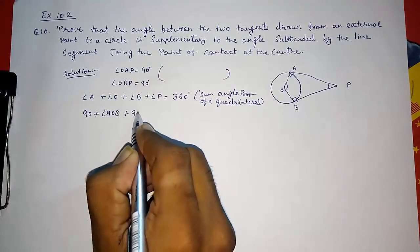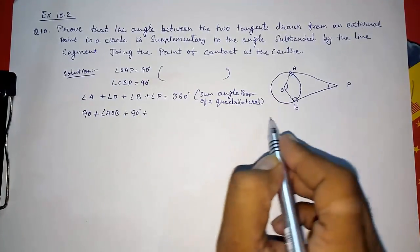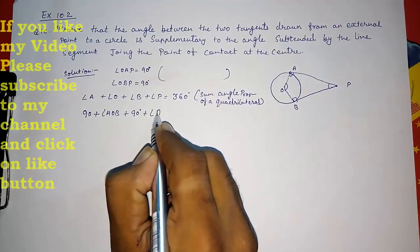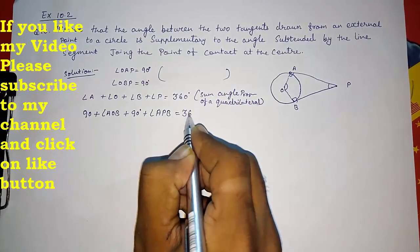...instead of B also 90 degrees, and instead of P I am writing the full name angle APB equals to 360 degrees.